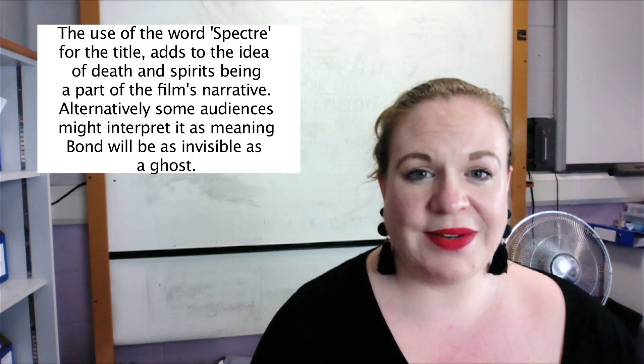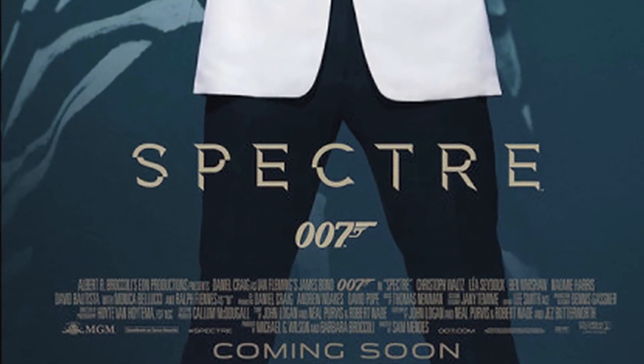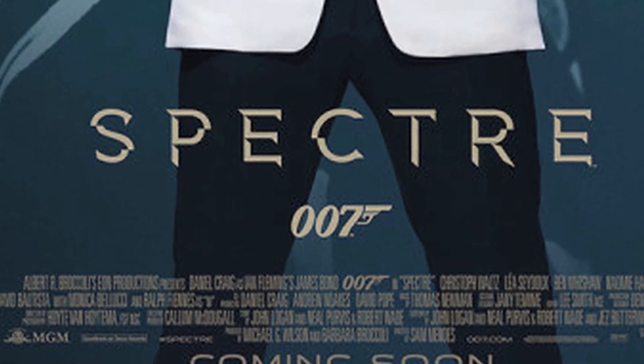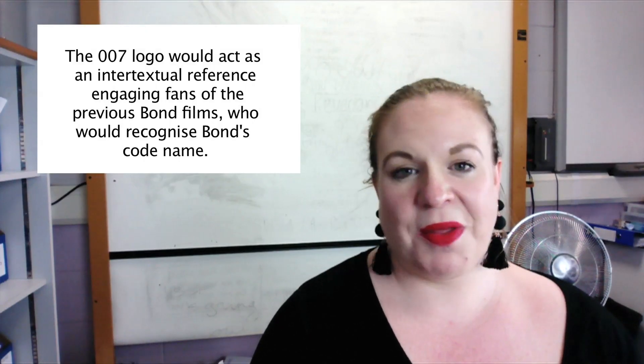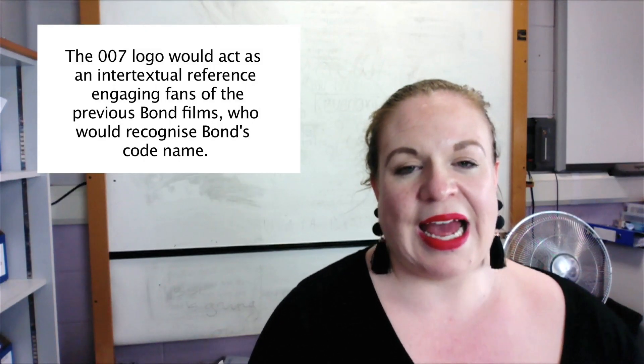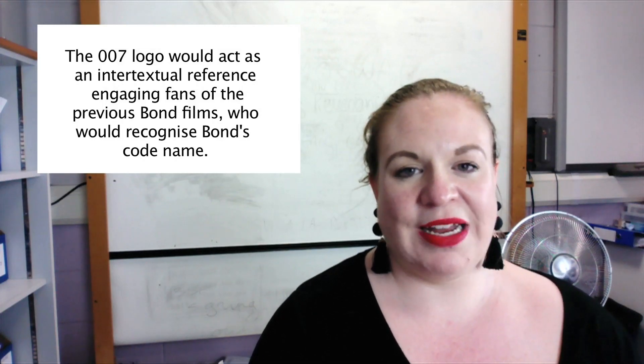They include the familiar 007 logo with the gun as part of the 7. This would be a familiar reference to audiences that have been on every other Bond poster in the past and again the gun connotes action and violence.